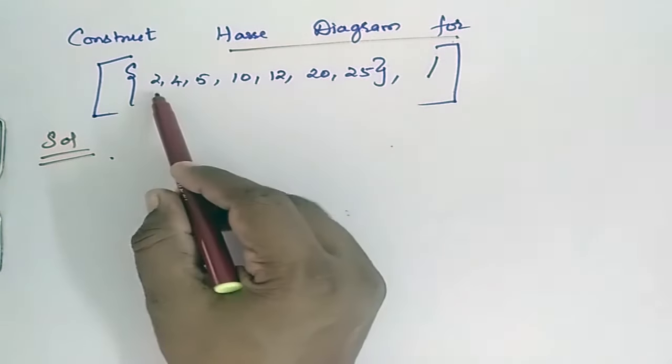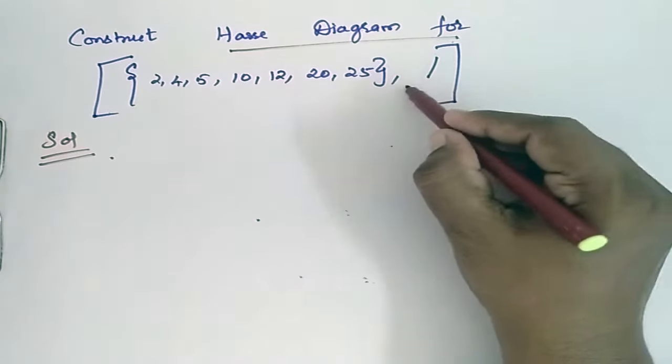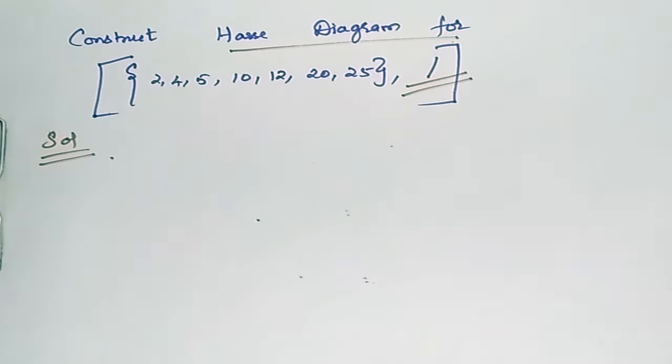Construct hash diagram for 2, 4, 5, 10, 12, 20, 25 where the relation you come across is division. Relation you come across is division.